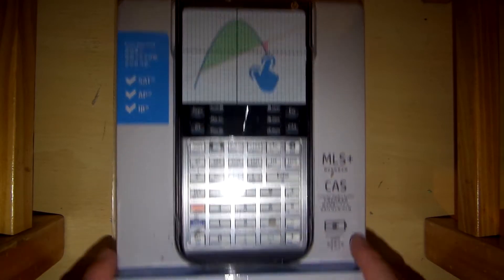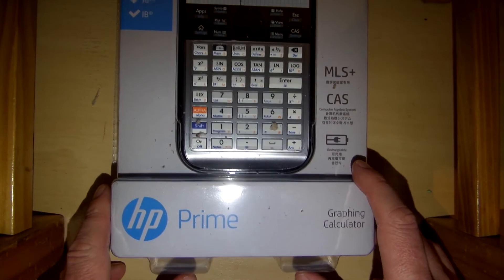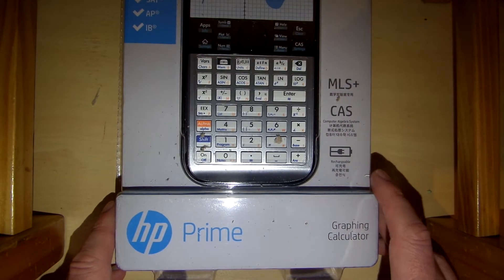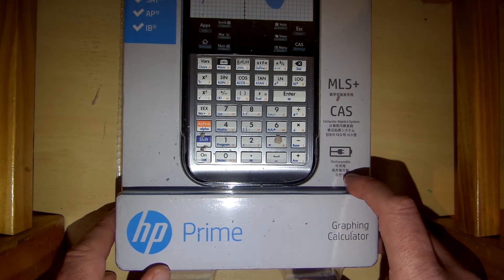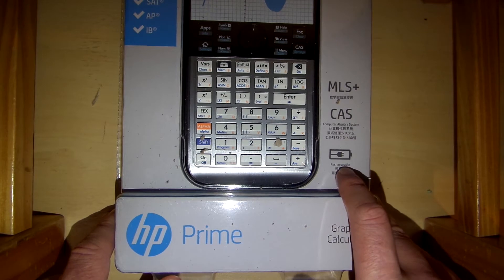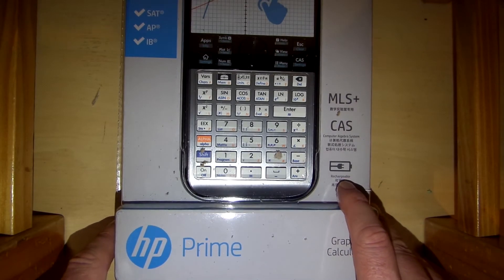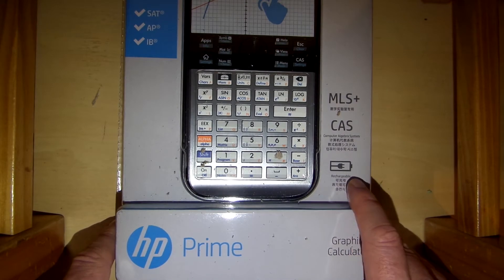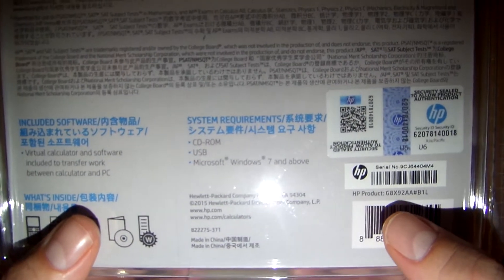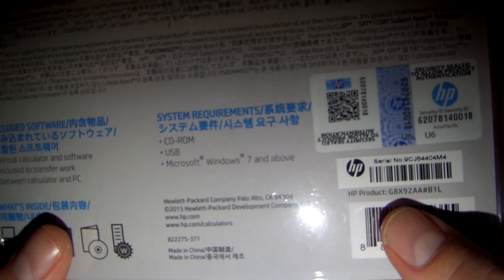In fact this is a video on the HP Prime graphing calculator. Now it wasn't a cheap purchase but I managed to get it from calculator king for $219 AUD. It's recently gone up to $260 AUD. This is actually the G8X92AA.